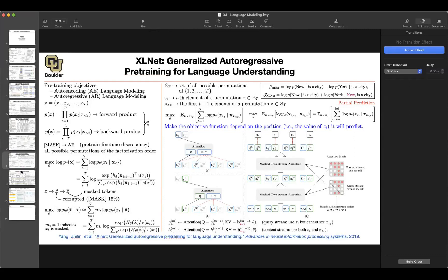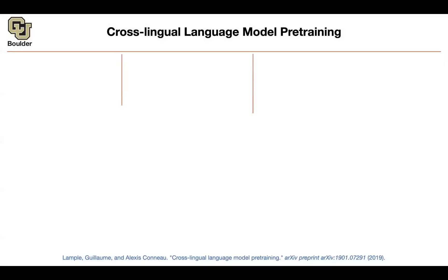So far, what we have been doing was about a single language, only English, when we were doing language modeling. Today, we are going to try to extend that to multiple languages, or cross-lingual language modeling. And again, we want to stick to the pre-training and then fine-tuning paradigm — it's similar to BERT. Now we want to extend it to multiple languages and have cross-lingual pre-training.